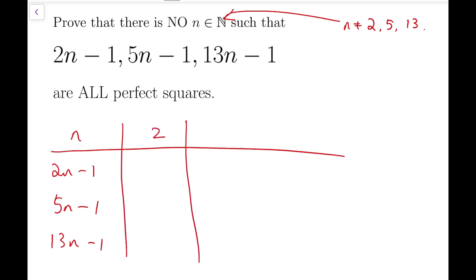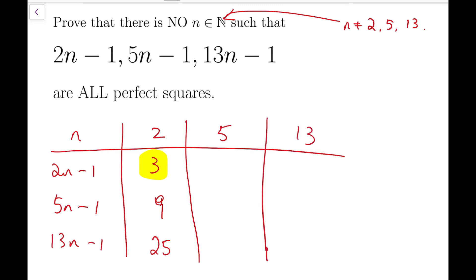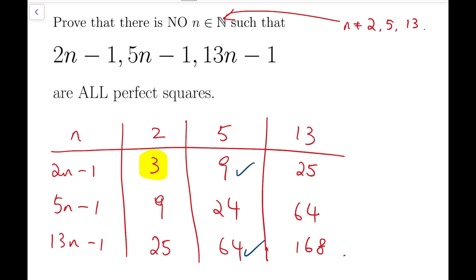So when n is 2, then 2n-1 is 3, 5n-1 is 9, and 13n-1 is 25. So only 2n-1 is not a perfect square, while the other two are. We can do the same for n=5 and n=13. The values are 9, 24, and 64 for n=5, or 25, 64, and 168 for n=13. Notice that the statement still holds when n equals 2, 5, or 13, and these are very close cases — we have 2 out of 3 being perfect squares.